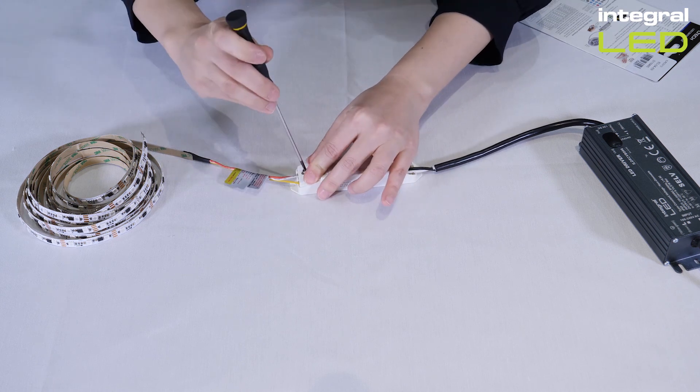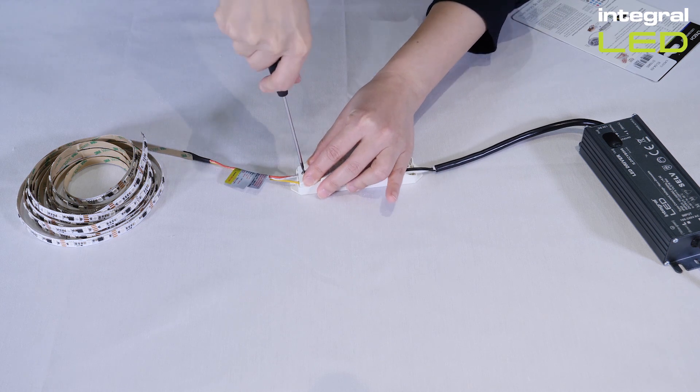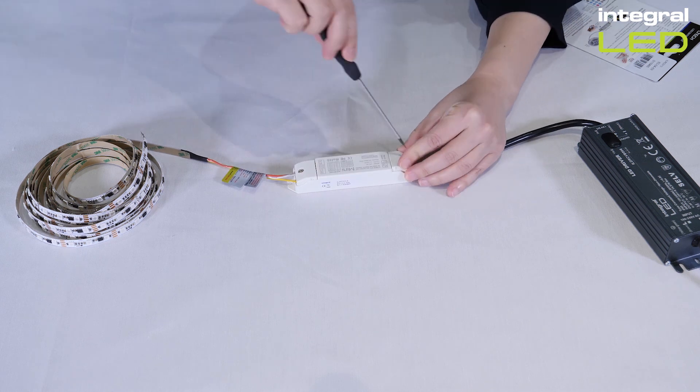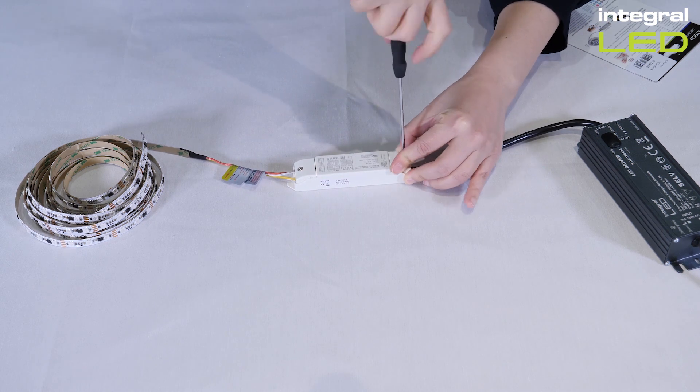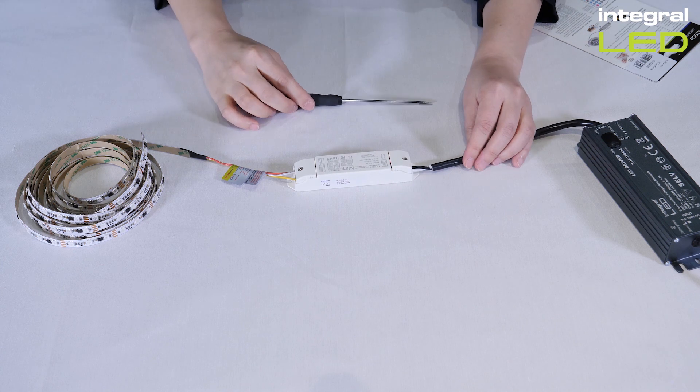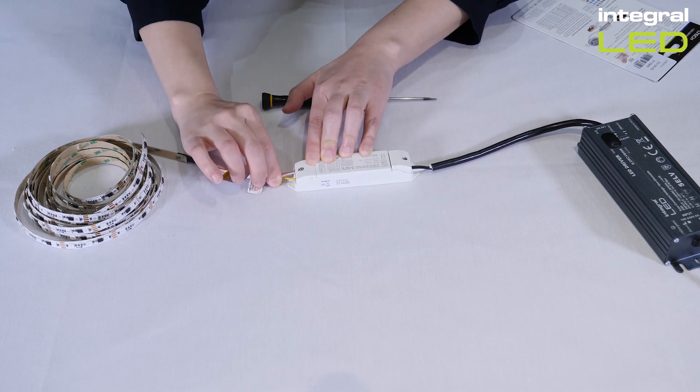When connection and setup is complete, switch off the main power. Replace the end caps on the receiver and screw tightly in place. Again, give the wires from the strip and the driver a gentle tug to make sure they are securely connected to the receiver.